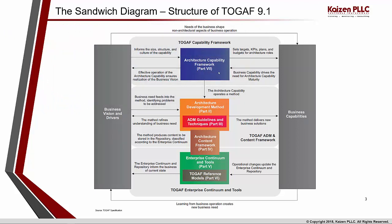Once you use the Architecture Capability Framework, you set targets, KPIs, plans, and budgets for the architecture roles. A KPI — key performance indicator — is a measurable value that demonstrates how effectively an organization is achieving its key business objectives. Week by week, month by month, you keep assessing to ensure you are moving in the right direction to achieve the desired capability.